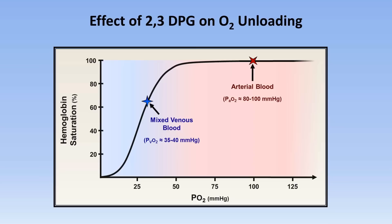In mixed venous blood, after the blood has passed through the capillaries in the body's various organs, the partial pressure of oxygen is around 35-40 mmHg, corresponding to a saturation of about 65-70%. In other words, 65-70% of the circulating hemoglobin in the veins is bound to oxygen. That difference of 30-35% between the saturation in the arteries and that in the veins corresponds to the amount of oxygen that was unloaded to the tissues for use in cellular respiration.